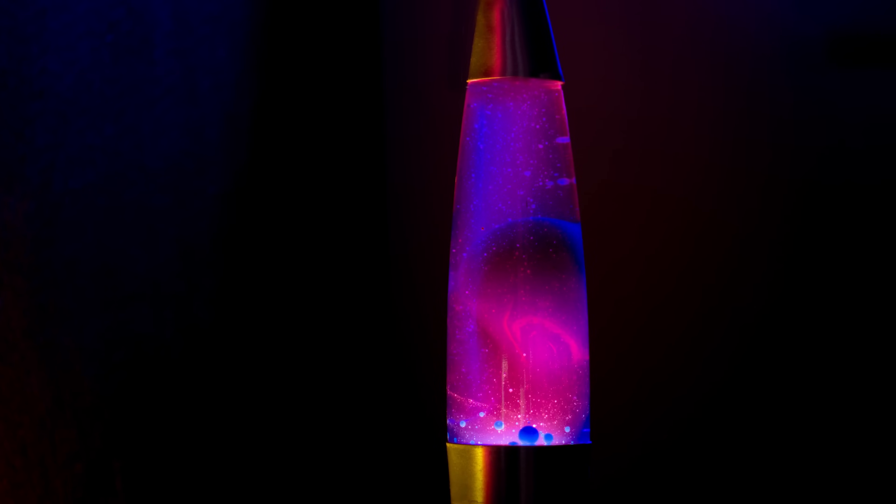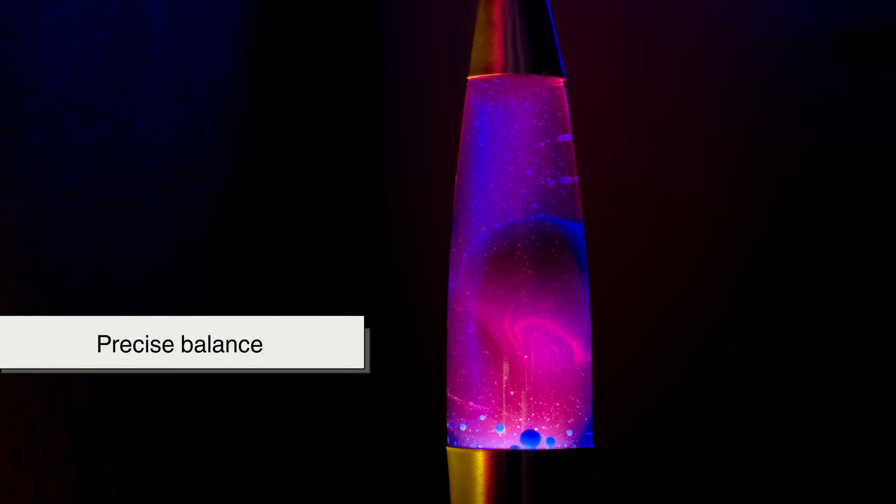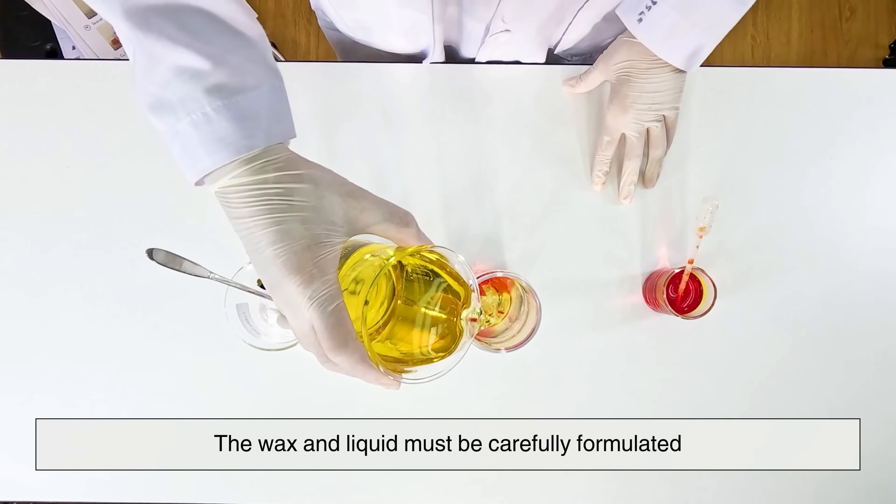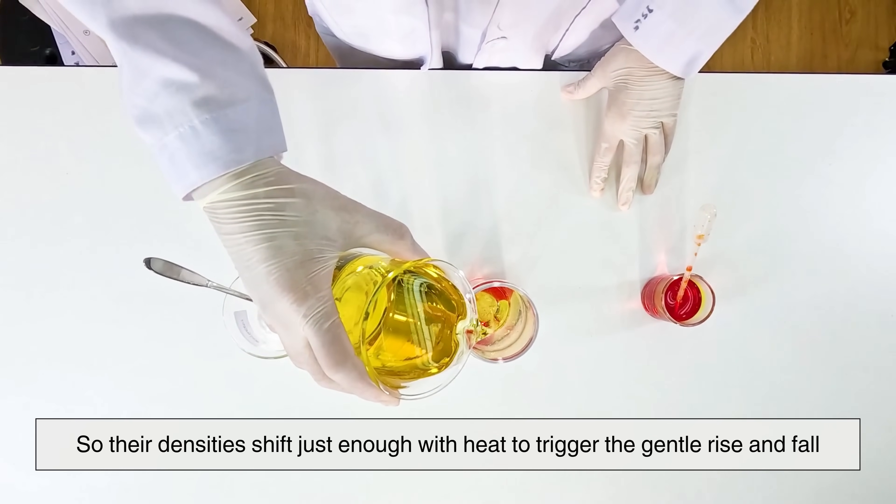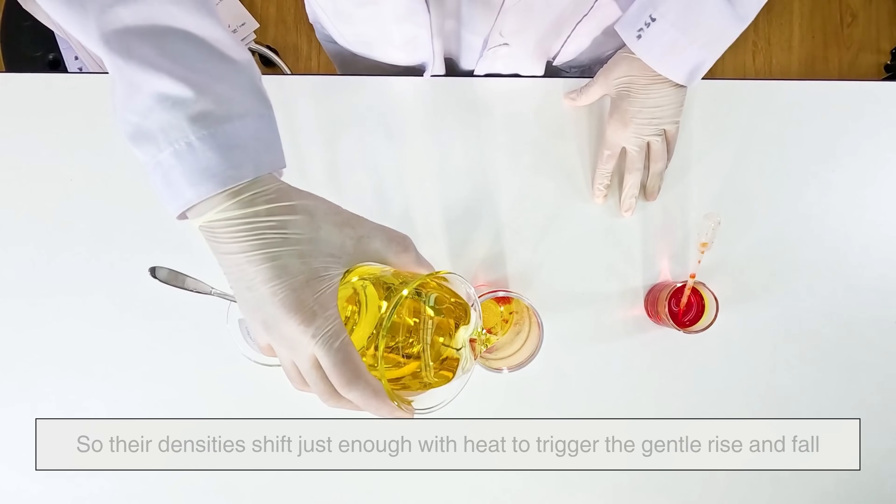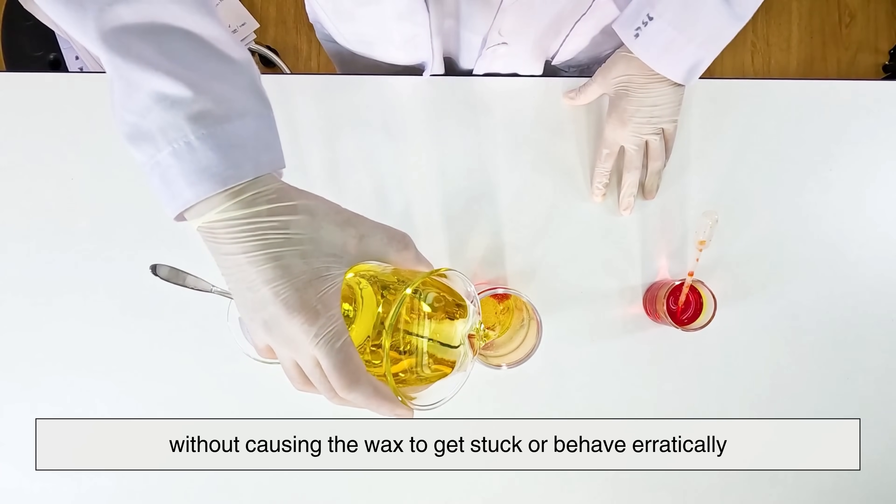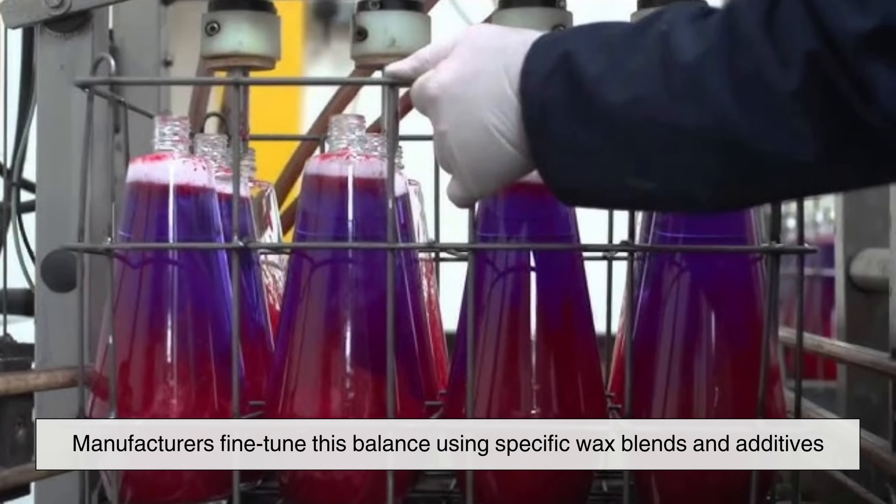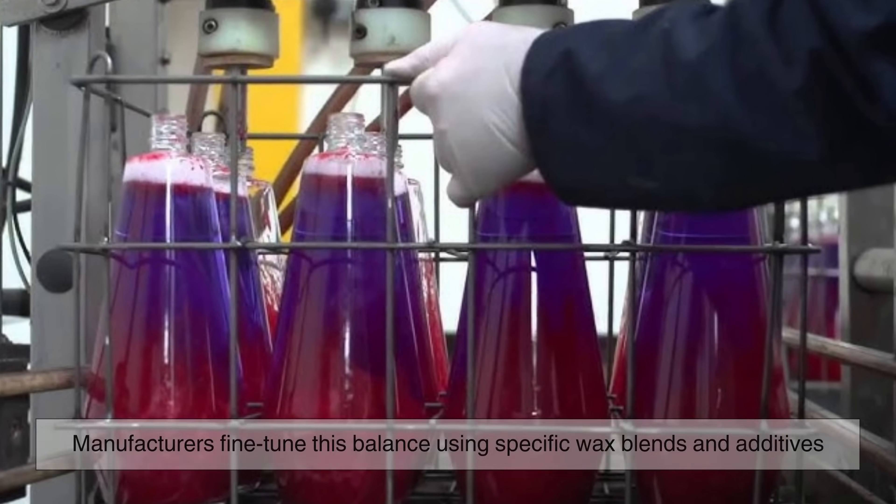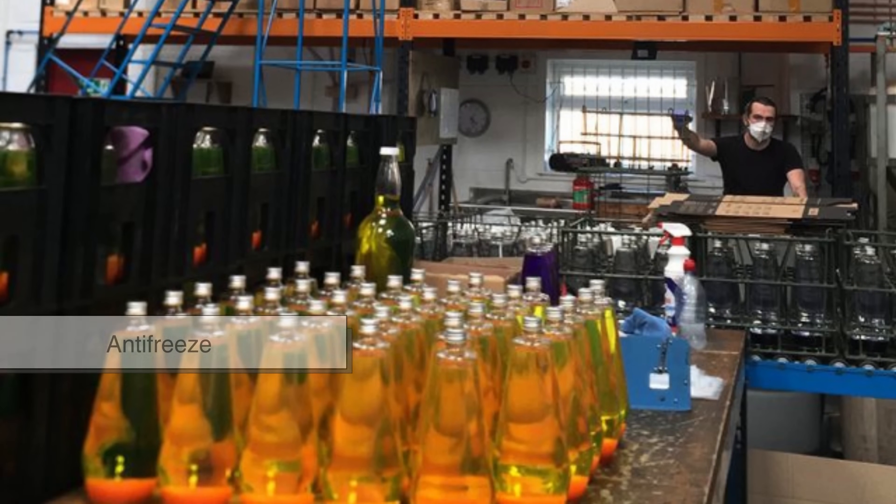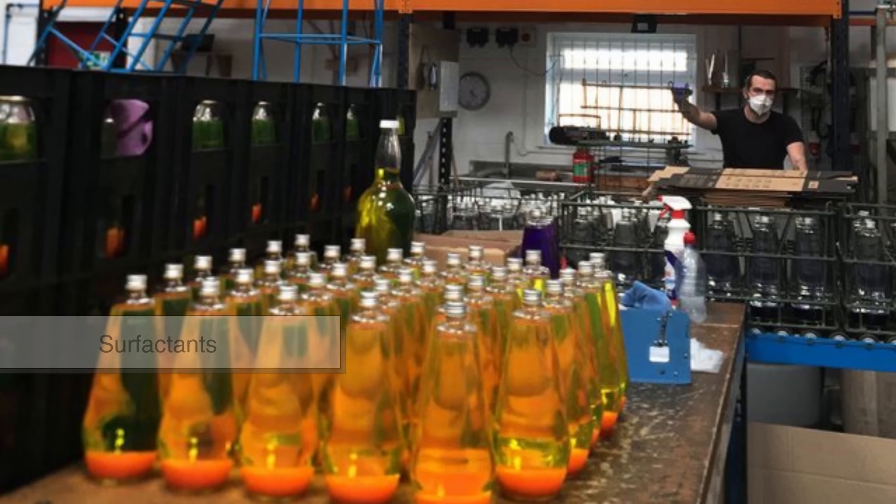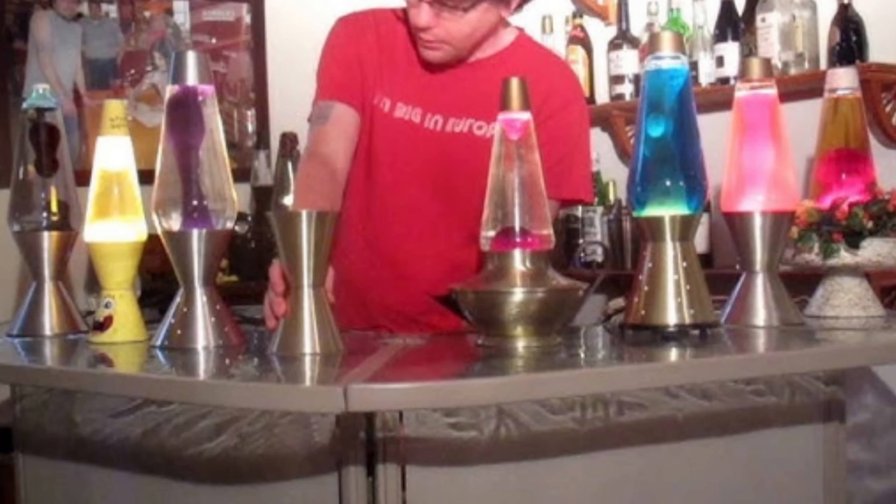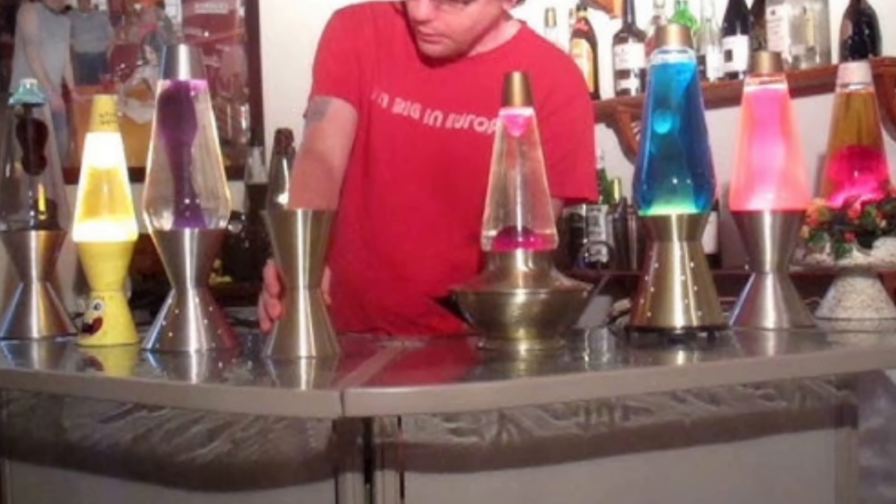The elegance of a lava lamp's motion relies on precise balance. The wax and liquid must be carefully formulated so their densities shift just enough with heat to trigger the gentle rise and fall, without causing the wax to get stuck or behave erratically. Manufacturers fine-tune this balance using specific wax blends and additives, while the liquid is adjusted with compounds like antifreeze or surfactants for clarity and stability. Even slight miscalculations can disrupt the entire effect. That delicate chemistry is what makes a well-made lava lamp both reliable and mesmerizing.